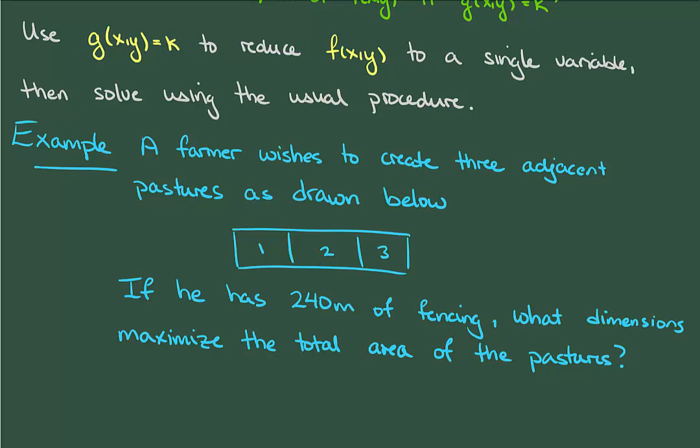Hopefully you can see why, without a constraint, this is a dumb problem. If there's no restriction on the amount of fencing the farmer can use, the biggest pasture he can make is arbitrarily large, right? No maximum exists. It's the addition of a constraint which makes this an interesting and ultimately solvable problem.